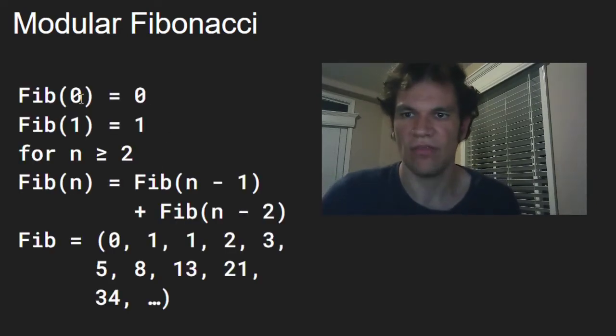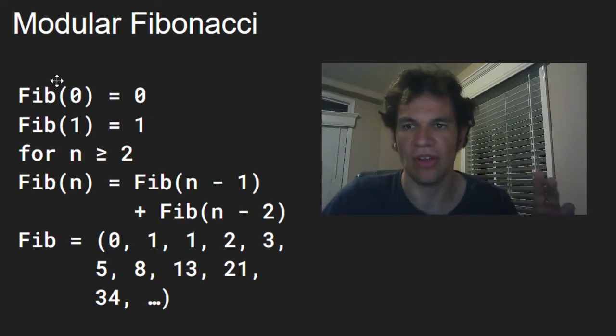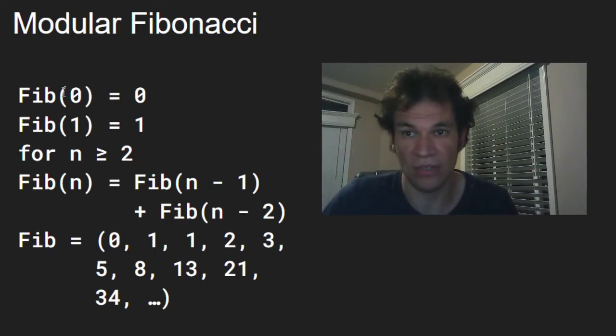The next topic is the modular Fibonacci. As a quick recap, these are the Fibonacci numbers. Fibonacci of 0 is 0, Fibonacci 1 is 1, and after that each Fibonacci number is the sum of the previous 2. So it starts with 0, 1, 1, 2, 3, 5, 8, 13, 21, 34, and so on.